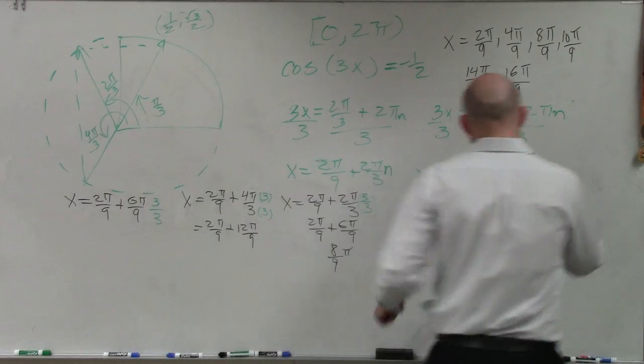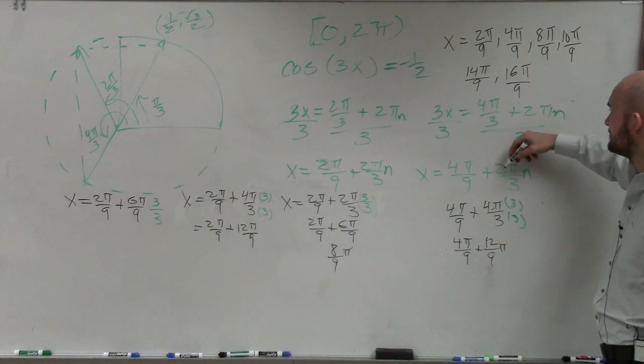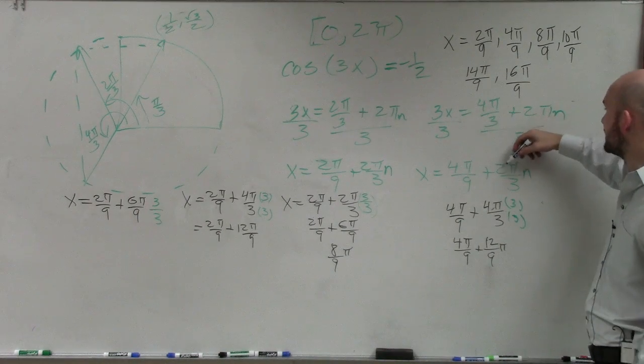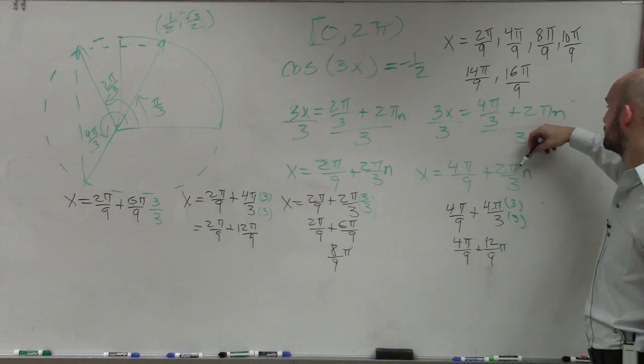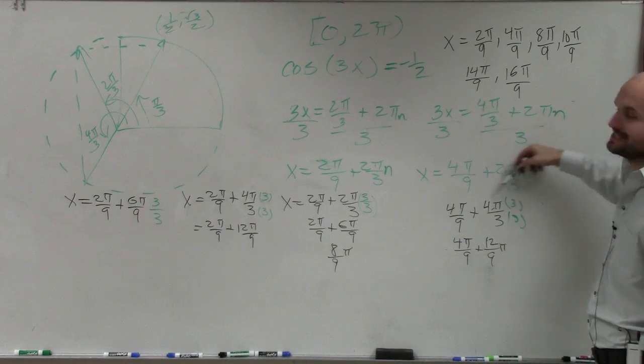And if we do the same thing here, if I put a 3 there, that's going to be 3 times 2 is 6. 6 plus, or sorry, 3 times 2 is 6, times 3 is 18, plus 4 is 22.